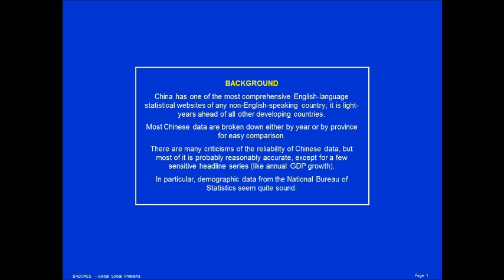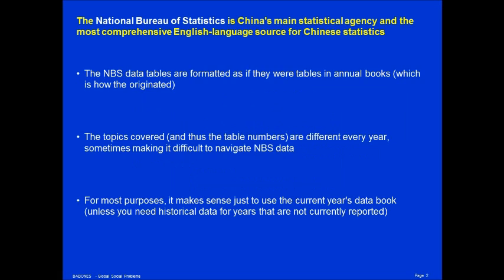That is, most of the data, as well as most of the criticisms. Except for a few sensitive headline series like annual GDP growth, I think we can largely trust the numbers. In particular, demographic data from the NBS seem quite sound and seem to tell a meaningful story.